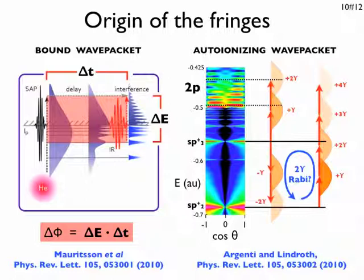These findings suggest that the interferometric spectroscopy proposed by Mauritson and others can be used to monitor also the dynamics of auto ionizing states.